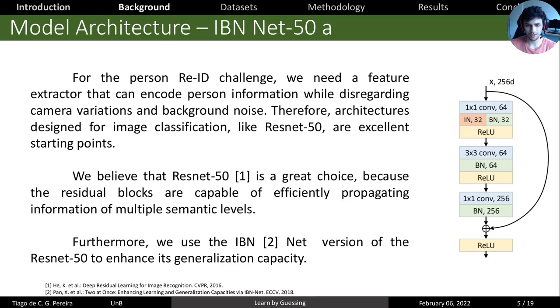For the model architecture, our challenge requires a neural network that's capable of extracting a feature from the subject in the image, so we want to disregard camera variations and background noise. Therefore, any architecture designed for image classification would be good for us. We choose to use the ResNet-50 as a good starting point. We also use the IBN version of the ResNet-50, because the instance normalization blocks help us to reduce the influence of the illumination in the image, so we can achieve better generalization in our network and achieve better results.